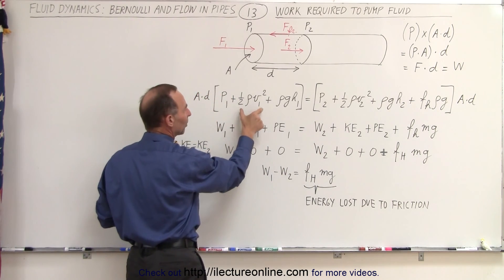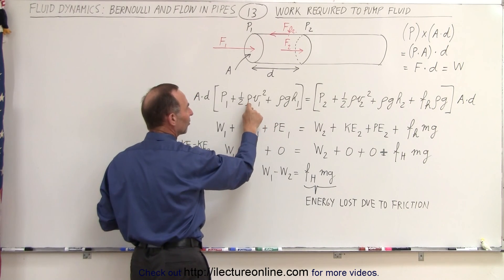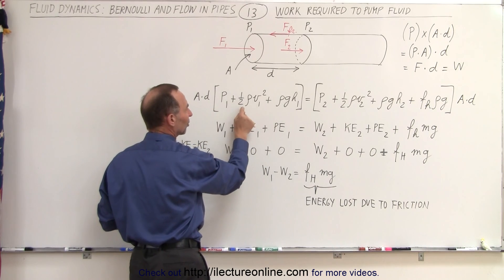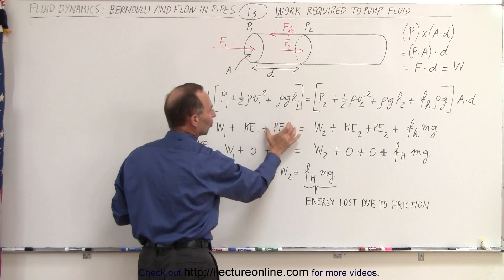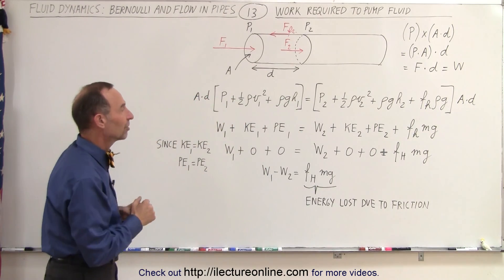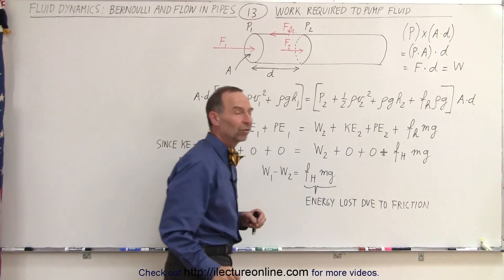Notice that this becomes the kinetic energy term and this becomes the potential energy term because density times volume gives us mass which gives us one half mv squared or kinetic energy and mgh so potential energy. We do so on both sides of the equation and here instead of density we end up with mass as well.